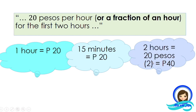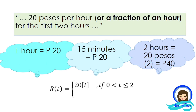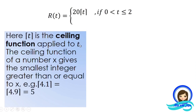For two hours, you pay 20 pesos times 2, which equals 40 pesos. From this, we can write the first equation: r(t) = 20⌈t⌉ for 0 < t ≤ 2, where 2 is included in this interval. Take note of the ceiling function symbol applied to t.